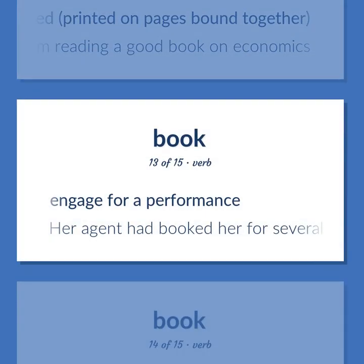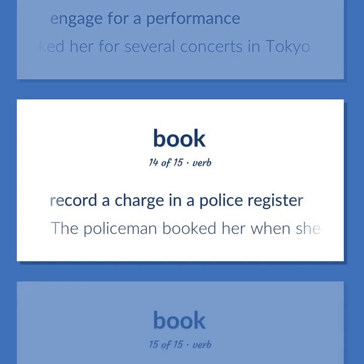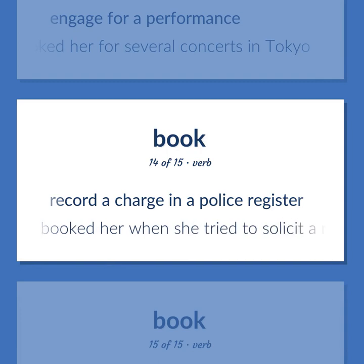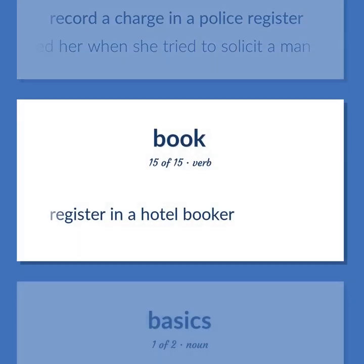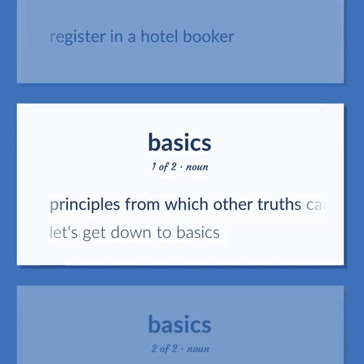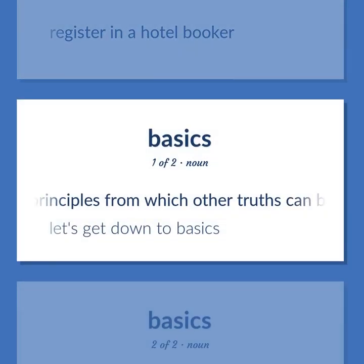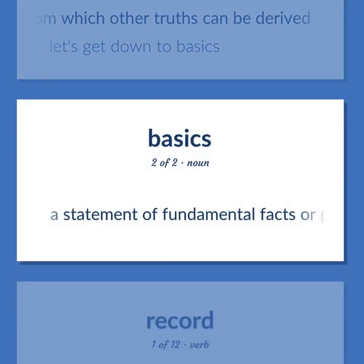Engage for a performance — her agent had booked her for several concerts in Tokyo. Record a charge in a police register — the policeman booked her when she tried to solicit a man. Register in a hotel booker. Basics: Principles from which other truths can be derived — let's get down to basics. A statement of fundamental facts or principles.